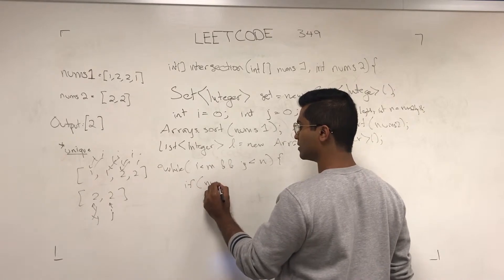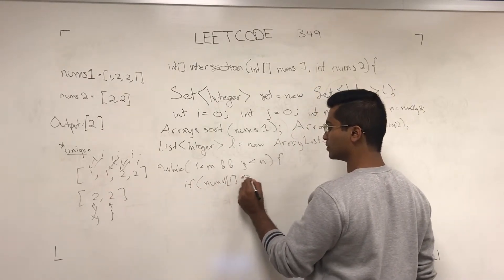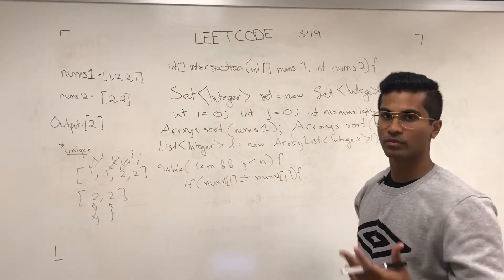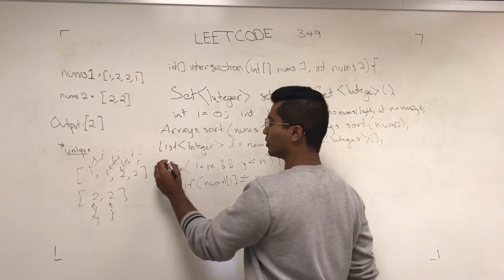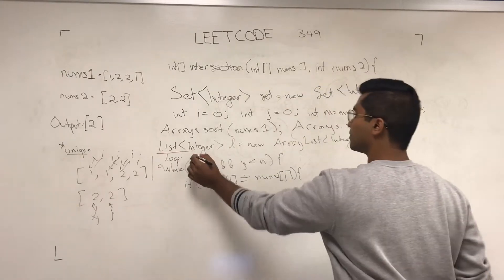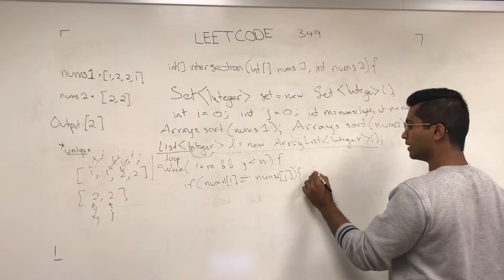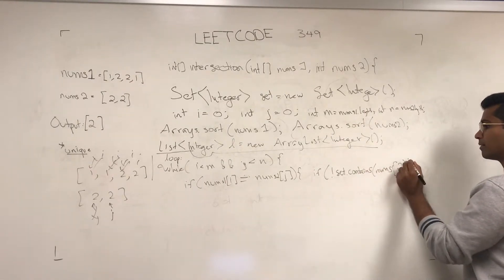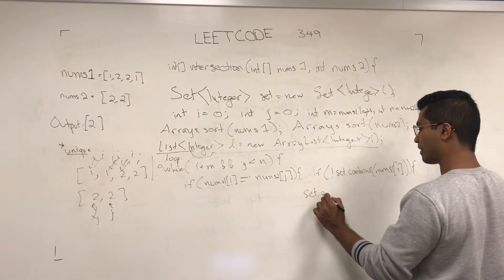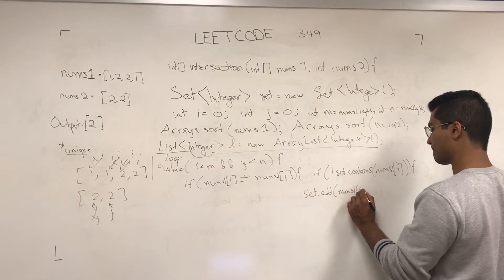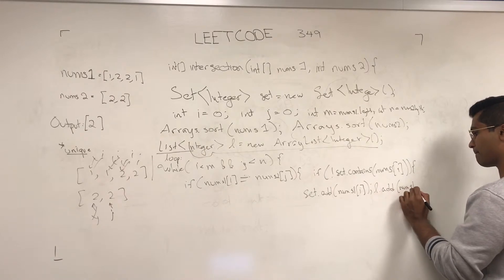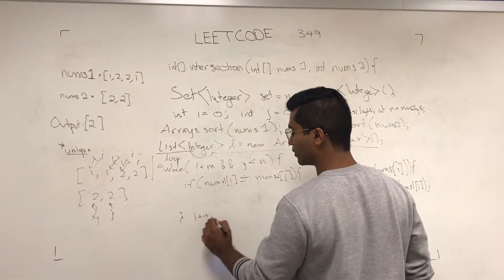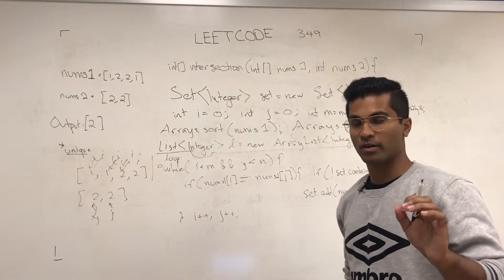Now, if nums1[i] equals nums2[j], then I want to check: did we add this one before or not? I'm going to label this while loop — I'm going to call it 'loop'. If the set doesn't contain the number, then I will add it. And that closes the if block. Then we have to increment the pointers, whether or not they were in the set already.